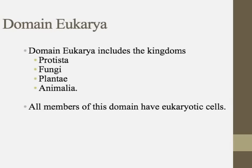Finally, the domain Eukarya — the eukaryotes — contains everyone else: Protists, Fungi, Plants, and Animals. This domain is defined as having eukaryotic cells.